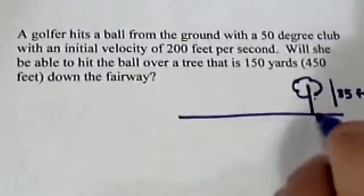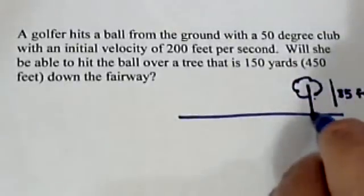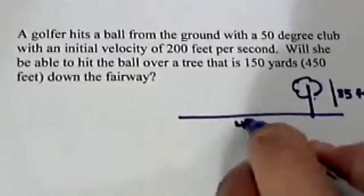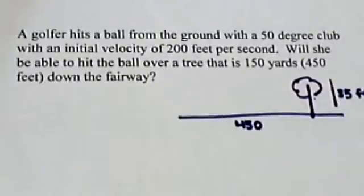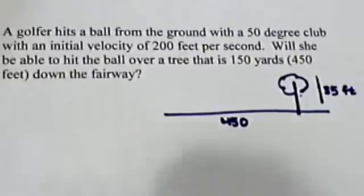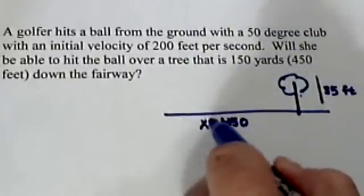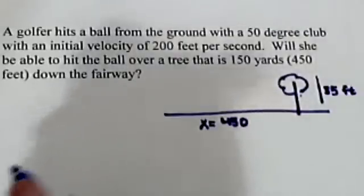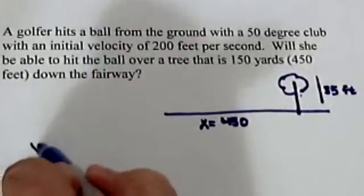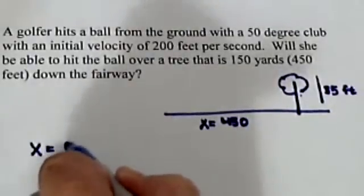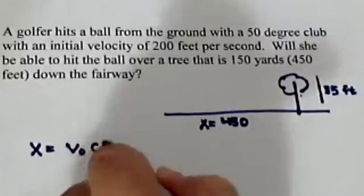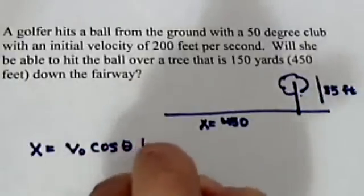So first of all, we need to know how long it's going to take for the ball to get down there 450 feet. We're going to use the x position, so the formula for that is x equals v₀ cosine theta t.